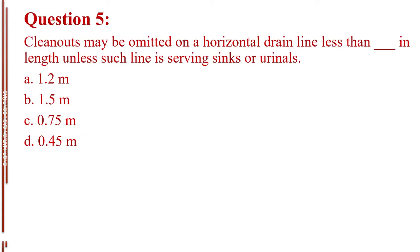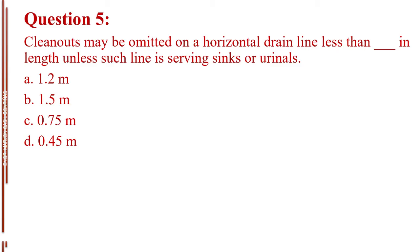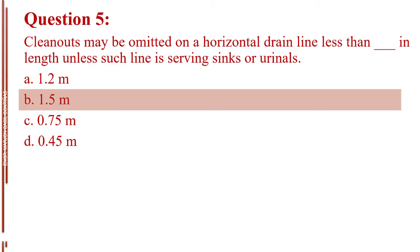Question number 5. Cleanouts may be omitted on a horizontal drain line less than blank in length unless such line is serving sinks or urinals. Letter A, 1.2 meters. Letter B, 1.5 meters. Letter C, 0.75 meter. Letter D, 0.45 meter. The answer is Letter B, 1.5 meters.